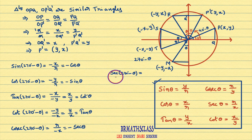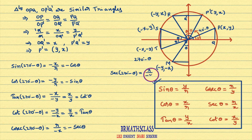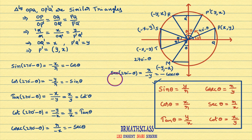Now we will see what is secant(270° - θ). Initially, secant θ is defined as radius divided by x-coordinate of the point. Here, x-coordinate of point M is -y, so that equals -R/y. R/y is cosecant θ. Therefore, secant(270° - θ) = -cosecant θ.